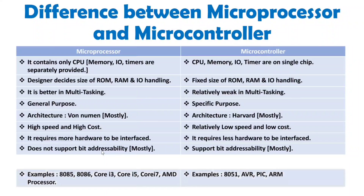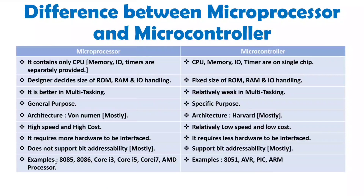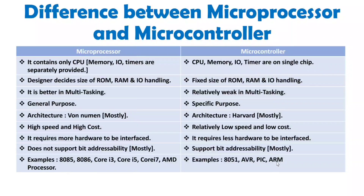Some examples of microprocessors available in the market are the 8085, 8086, Core i3, Core i5, Core i7, and AMD processors. For microcontrollers, examples include the 8051, AVR, PIC, and ARM microcontrollers. Note that ARM also has microprocessors available, but ARM microcontrollers are also very famous, which is why they are listed here.